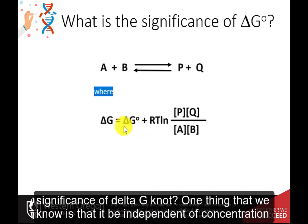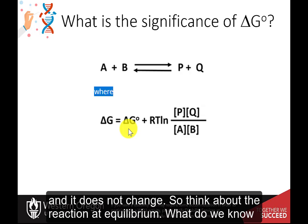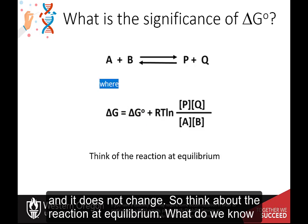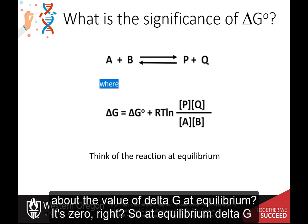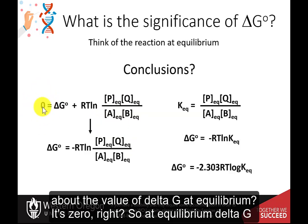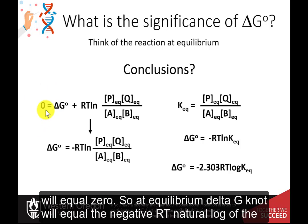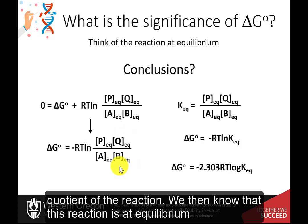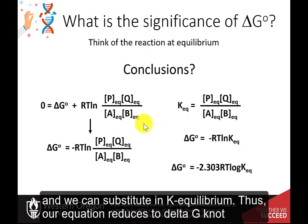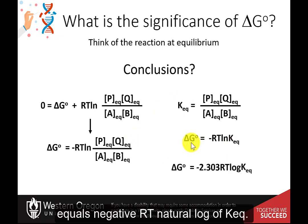So what is the significance of delta G naught? One thing we know is that it is independent of concentration and does not change. At equilibrium, delta G equals zero. So at equilibrium, delta G naught equals the negative RT natural log of the reaction quotient. Since the reaction is at equilibrium, we can substitute in K-Equilibrium, and our equation reduces to: delta G naught equals negative RT natural log of K-Equilibrium.